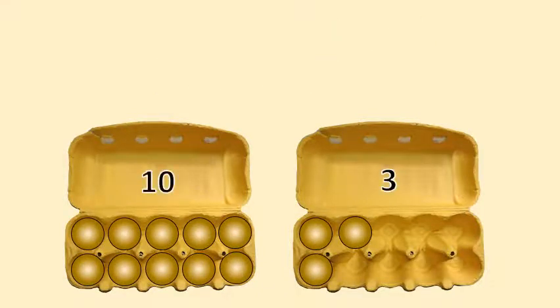One box is full and the other box has just 3 eggs. We know that a box will contain 10 eggs if it's full. So all we have to do is add 10 and 3 and we get 13.